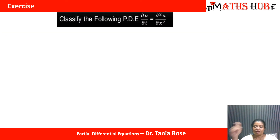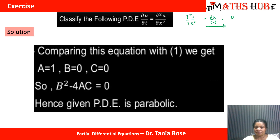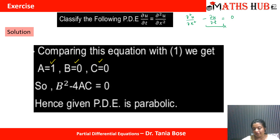Let's check the first exercise: classify the PDE ∂u/∂t = ∂²u/∂x². Taking all terms to one side, we are not interested in the first order term ∂u/∂t. Comparing with the standard equation, a = 1, and there are no ∂x∂y or ∂y² terms, so b = 0 and c = 0. Computing b² − 4ac gives 0, so this PDE is parabolic in nature.